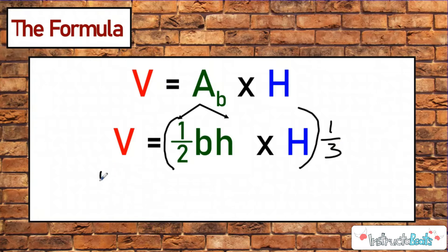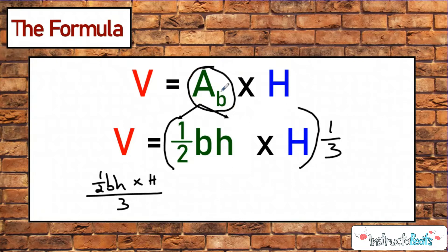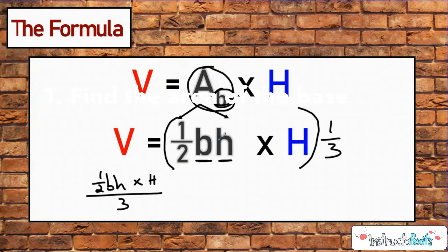We could rewrite the volume formula for a triangular prism and then divide by three. I want to pause right here — the A subscript B means area of the base. The B and H in the triangle formula are going to be two sides of that triangle that make up the base, which we call base and height. I didn't want you guys to get confused on that. Let's write down some steps and then get into some examples.